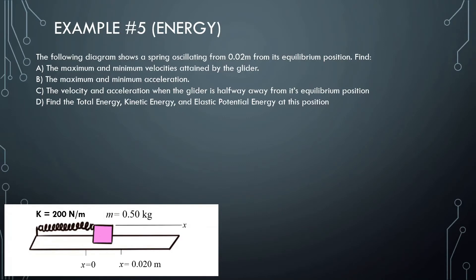The following diagram shows a spring oscillating 0.02 meters from its equilibrium position. Find the maximum and minimum velocity attained by the glider. First, the minimum velocity: the minimum velocity occurs at the amplitude, where the object slows to a stop before turning back. So v_min is 0 meters per second at the amplitude.